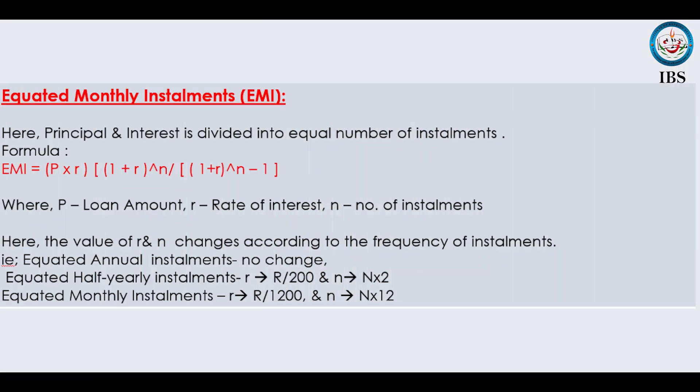How do you calculate equated monthly installments of a loan? There is a very simple formula. The formula for EMI is: P into R into (1 plus R) the whole raised to N, divided by (1 plus R) the whole raised to N minus 1. Here P stands for the loan amount, R stands for the rate of interest, and N is the number of installments.